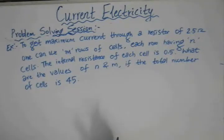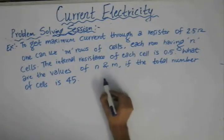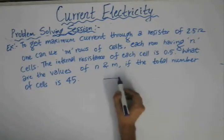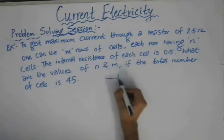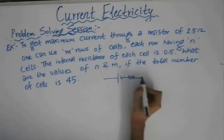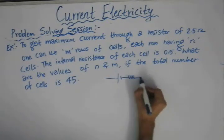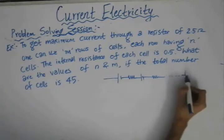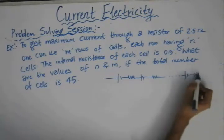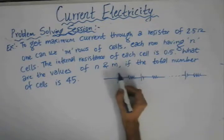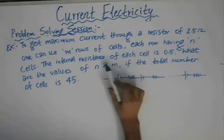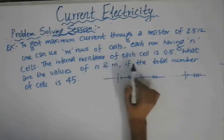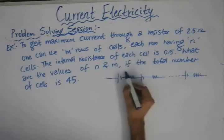What we have here is a circuit consisting of M rows. And in each single row, we have N identical cells with some internal resistance. So in each of the rows, we have N identical cells, and the internal resistance of each of the cells is 0.5 Ohm.